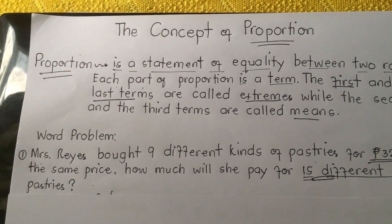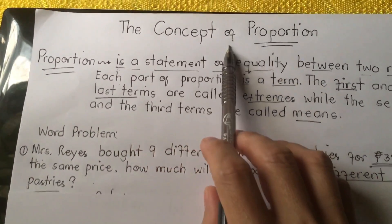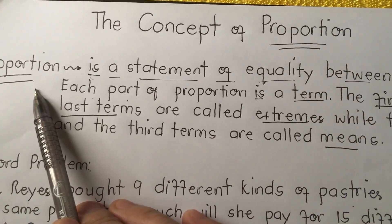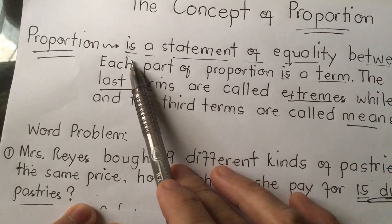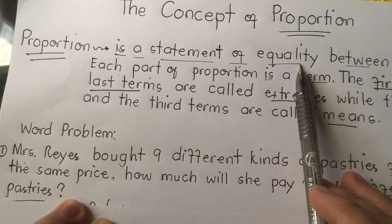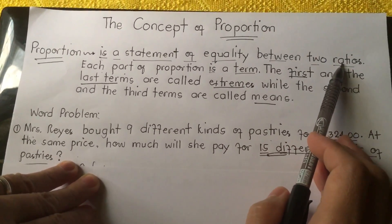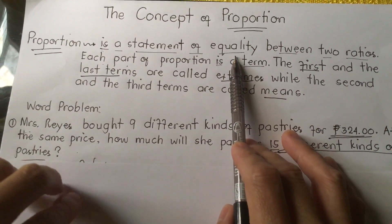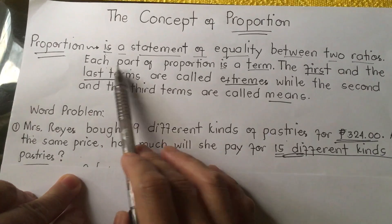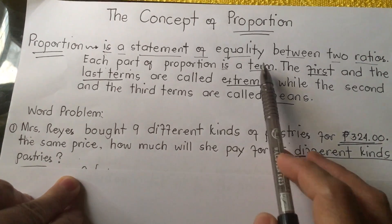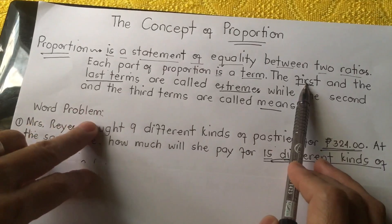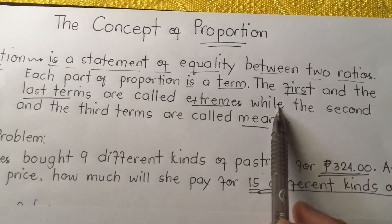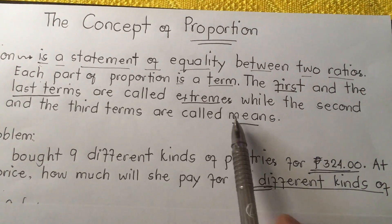Today we are going to discuss about the concept of proportion. Talking about proportion, we are going to define first — it is a statement of equality between two ratios. Each part of a proportion is a term. The first and the last terms are called extremes, whereas the second and the third terms are called means.